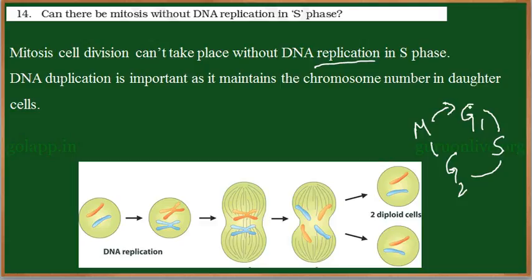First, all the activities in G1 phase are cleared. The checkpoint allows the cell to enter S phase where DNA is replicated. Once DNA replication is completed, the checkpoint confirms it and allows entry into G2 phase. When G2 activities are completed, the cell is allowed to enter M phase. Without DNA replication, the checkpoint does not allow the cell to enter G2 phase — meaning without DNA getting replicated, the cell can never undergo mitosis.